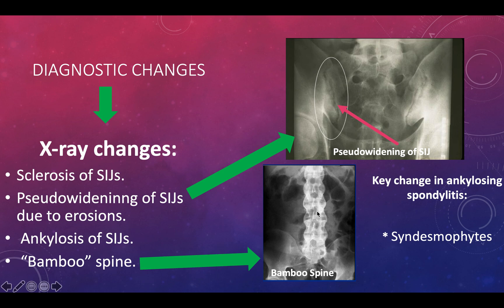There is also ankylosis, i.e. fusion of the sacroiliac joint. A key x-ray finding in ankylosing spondylitis is syndesmophytes — slight bony growths that protrude outwards during the fusion process.